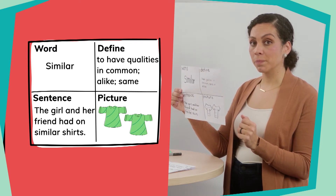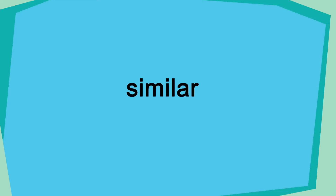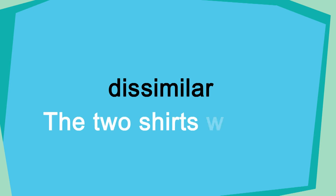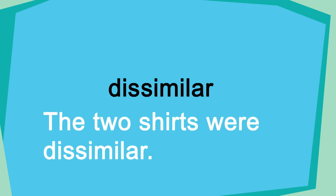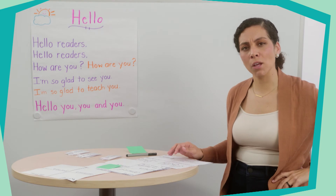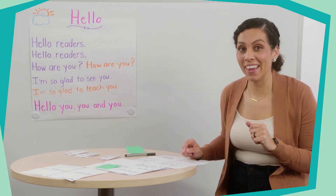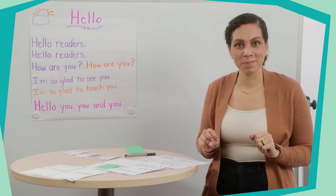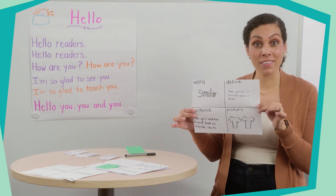So that way when I see or hear the word similar, I know that it means the same. Now that we know what the word similar means, I want you to think about what the word 'dissimilar' means. The two shirts were dissimilar. When I add a prefix like 'dis' to a word, it means 'not.' So if 'dis' means not and similar means the same or alike, then dissimilar will mean not alike or not the same. Can you think of a motion to help you remember the word similar? Here's mine — similar, two and two are the same.